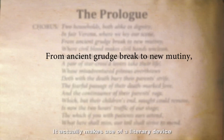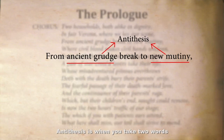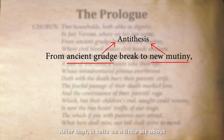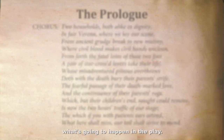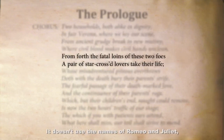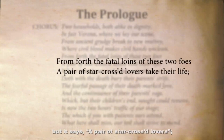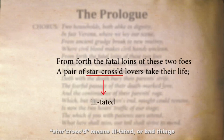The chorus makes use of a literary device called antithesis. Antithesis is when you take two words that are opposites and use them in a phrase — here we have 'ancient,' meaning very old, and 'new.' After that, it tells us a little bit about what's going to happen. It doesn't use the names Romeo and Juliet, but it says 'a pair of star-crossed lovers.' Star-crossed means ill-fated — bad things are going to happen to them.